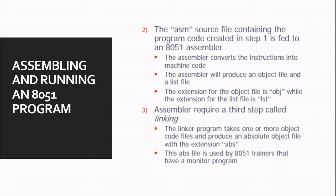The third step is called linking. The linking program takes one or more object files — for example, two files with the .obj extension — and links those files together to generate a new file with the .ABS extension. The ABS file is used for 8051 trainers that have a monitor program.